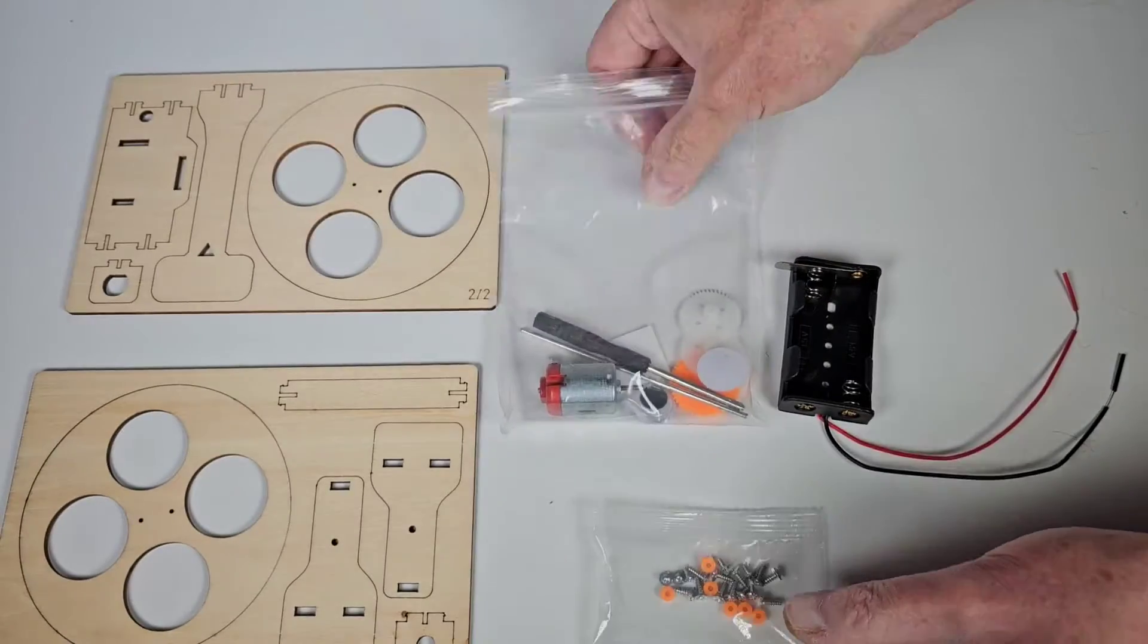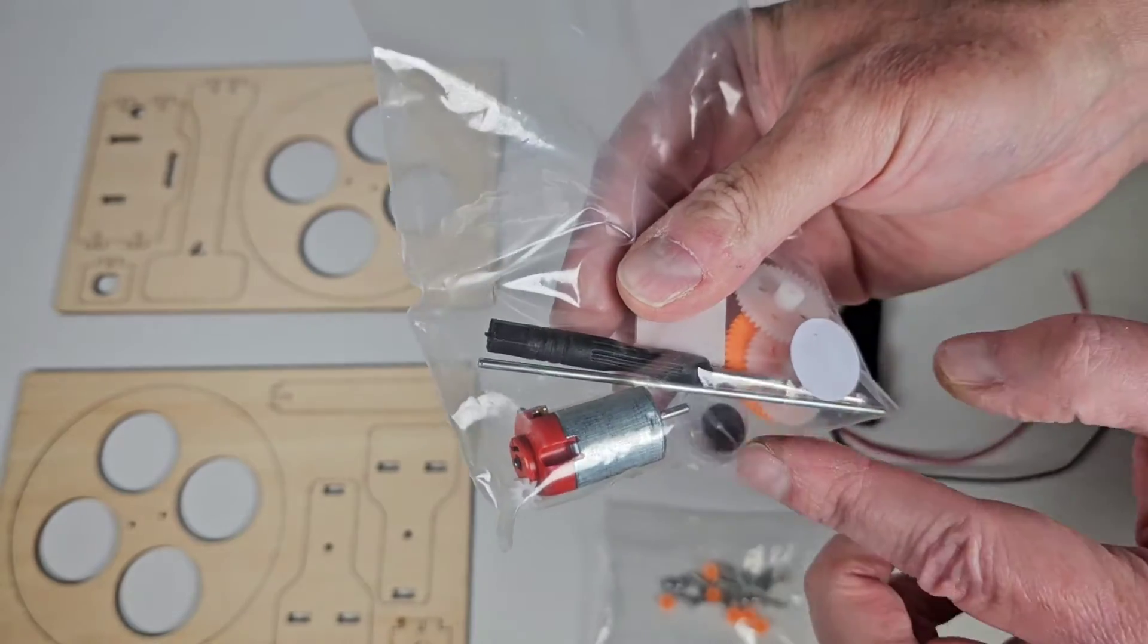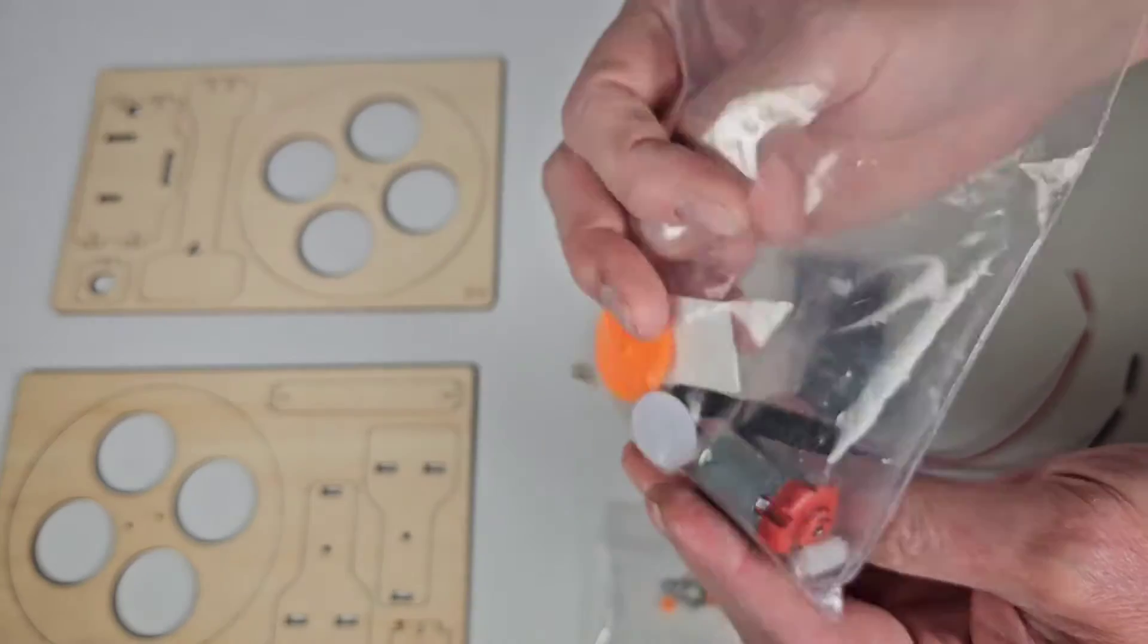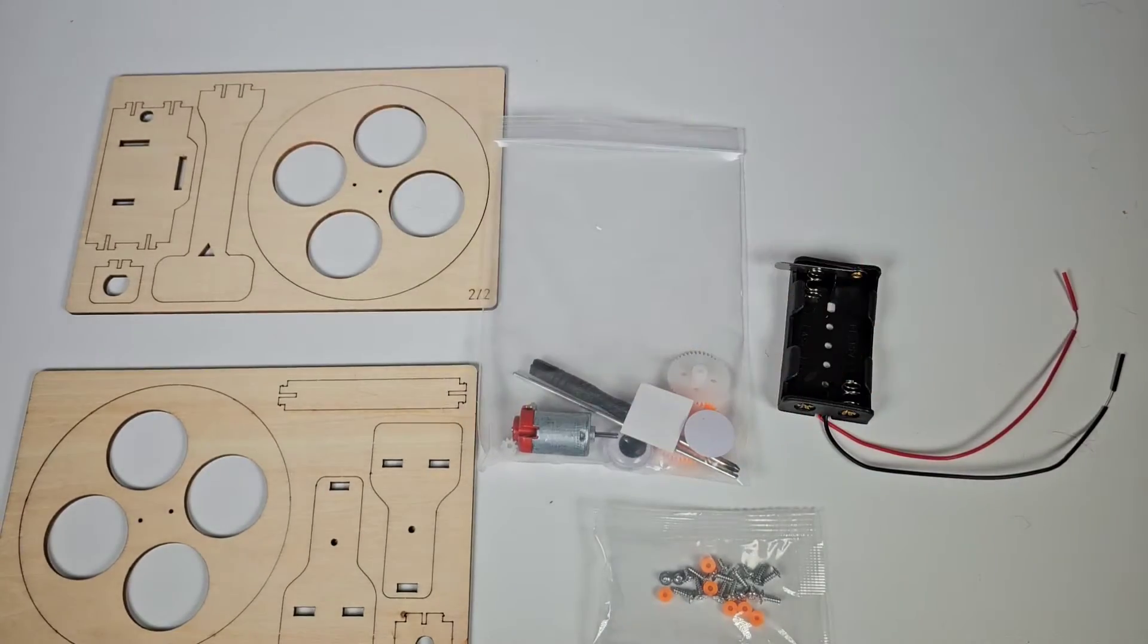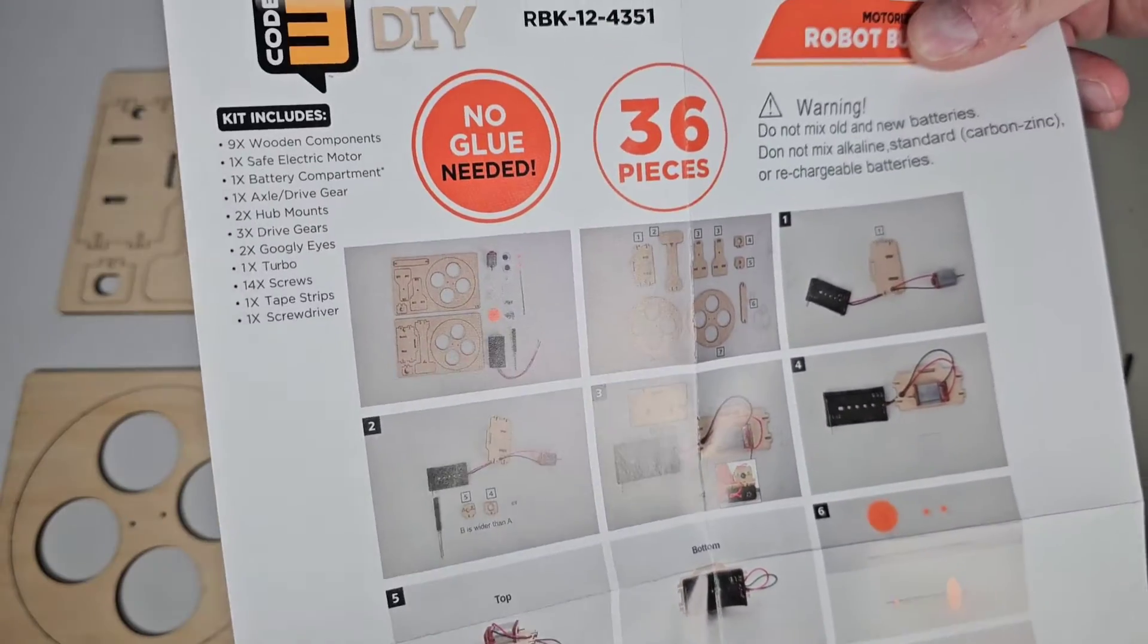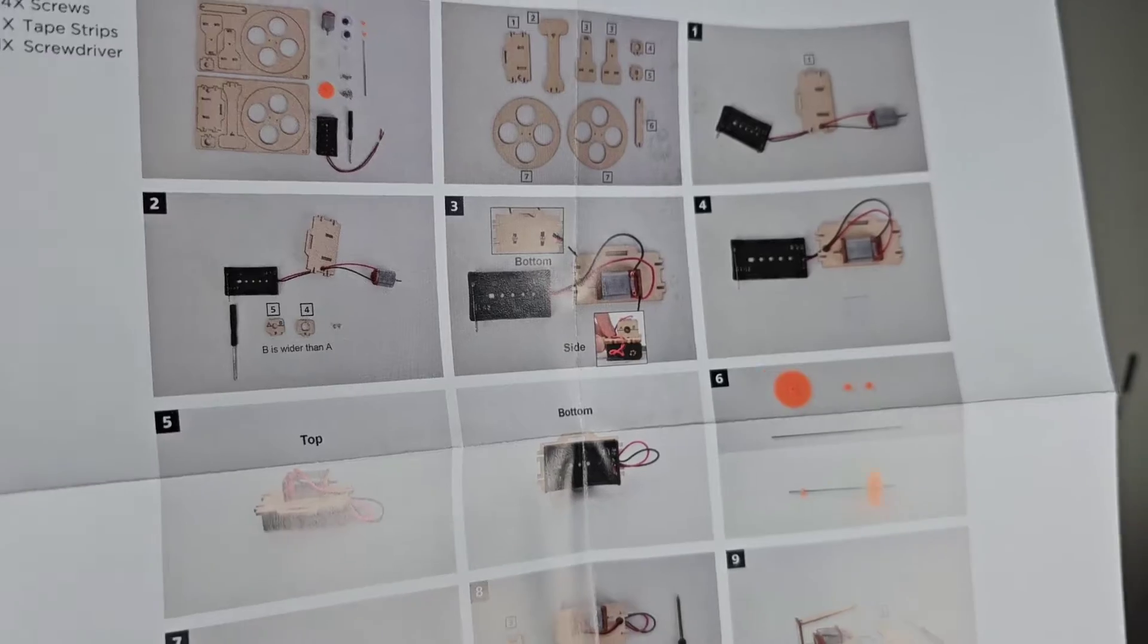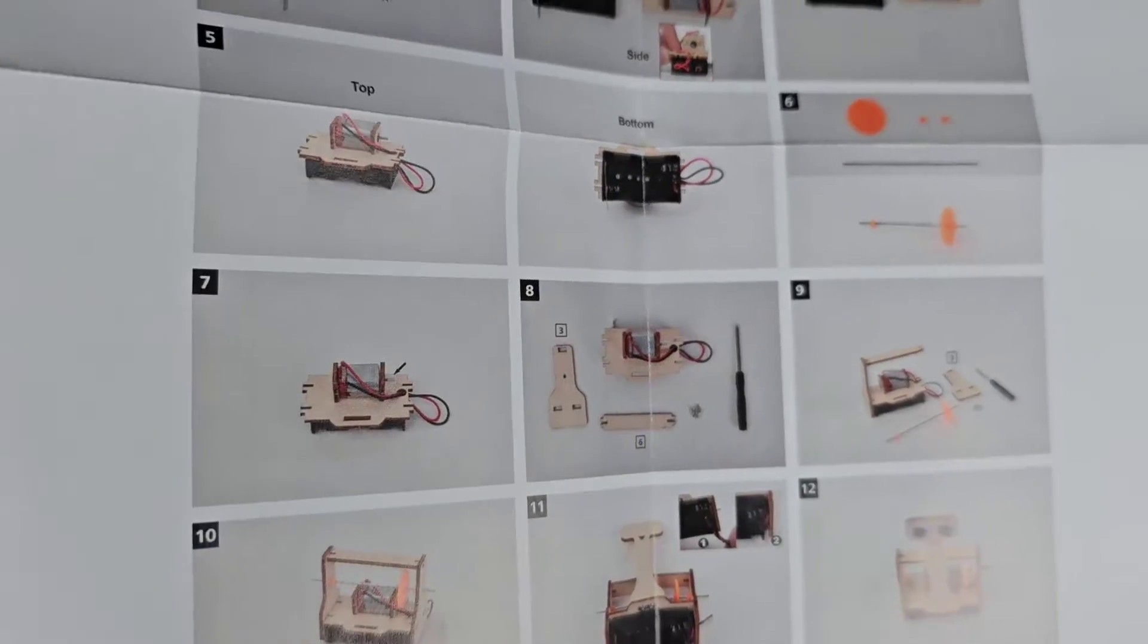And then here we've got the motor, a screwdriver to screw the screws in, the googly eyes, some double stick tape to put those on, and some gears. Very simple kit, so it should be pretty darn cool and thankfully easy. Here's the instructions. There's only 15 steps, so you can see very easy to do, not a whole lot going on here. Probably take not very long to put together, maybe an hour.